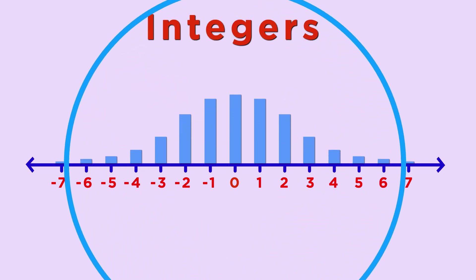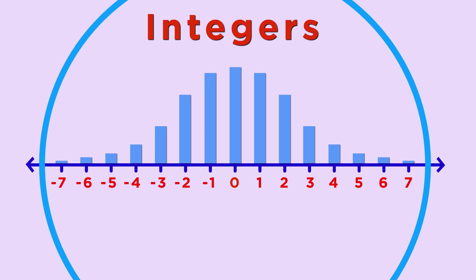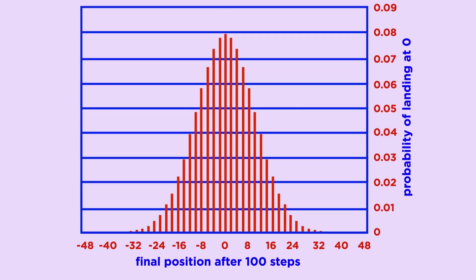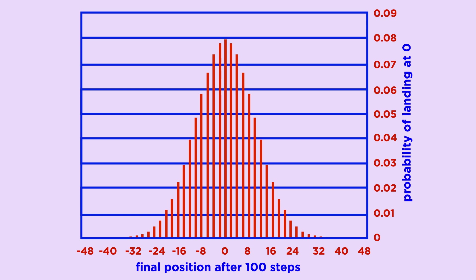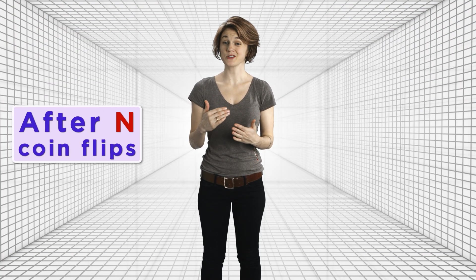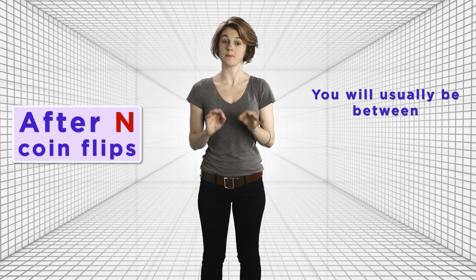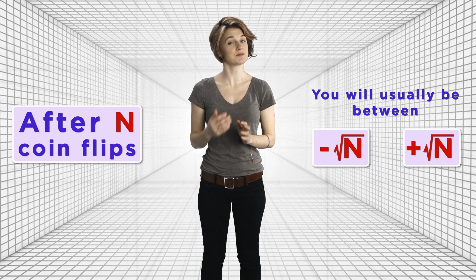The probabilities of a random walk being in a specific location begin to form a bell curve. Notice that in the picture of the probability distribution after 100 coin flips, most of the time you'll be between plus 10 and minus 10. Here's the more general version of that statement: after n coin flips, you'll usually be between minus square root of n and plus square root of n.